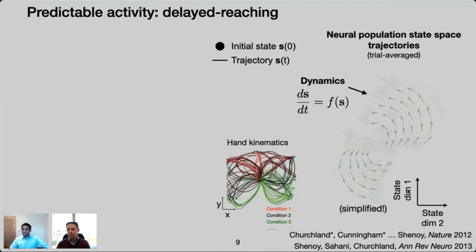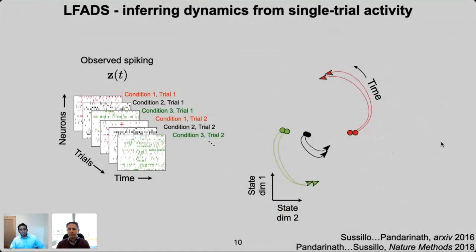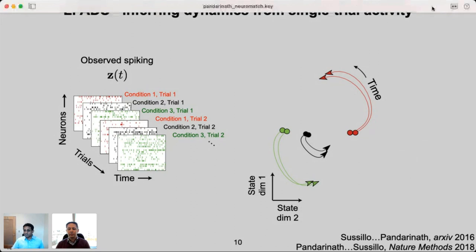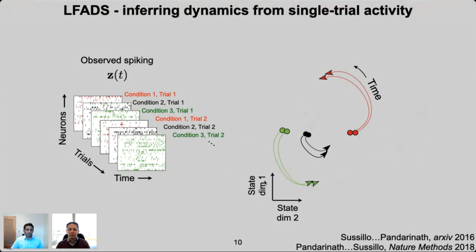Our goal with LFADS was to see if we could infer these types of dynamics from single-trial activity, rather than having to average across many repeats of the same movement. If you believe there's an underlying dynamical system, then that dynamical system should be present on individual trials — you shouldn't have to average across trials. The basic idea is that for a given trial, we have spiking activity — some number of neurons by time — and we should be able to represent each individual trial by a different initial state, while learning one consistent set of dynamic rules that describes how activity evolves over time. Given the initial state and those dynamic rules, you should just be able to integrate over time to describe how the activity evolves during that window.